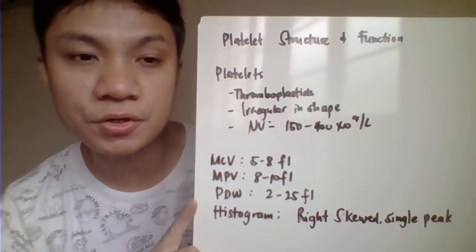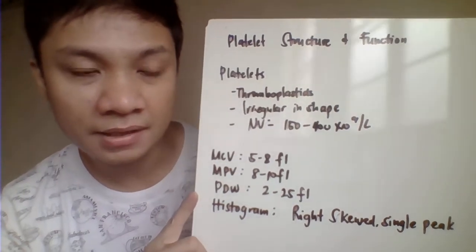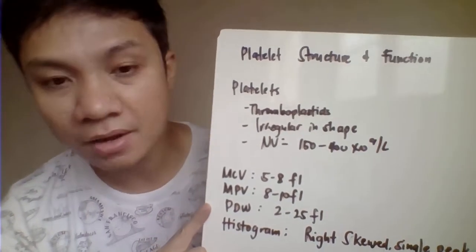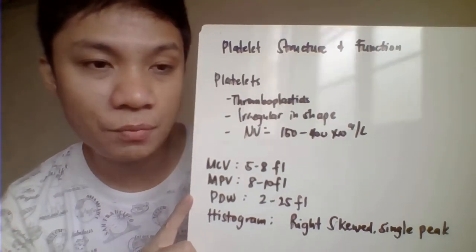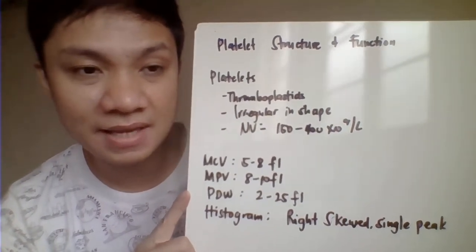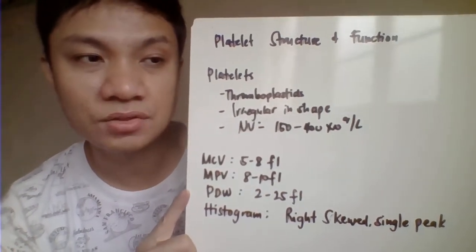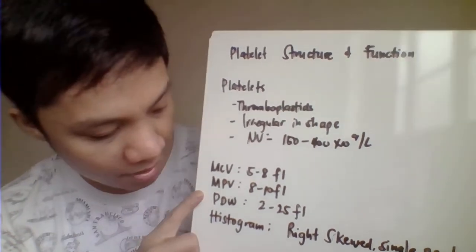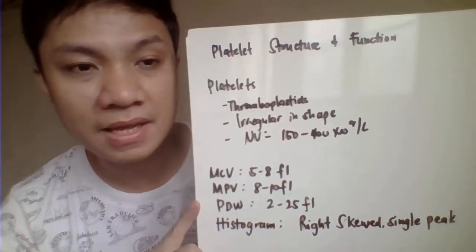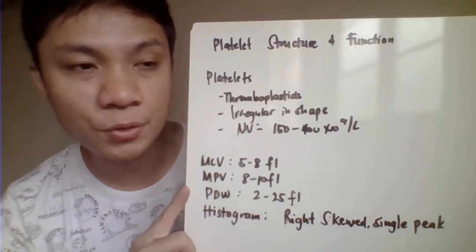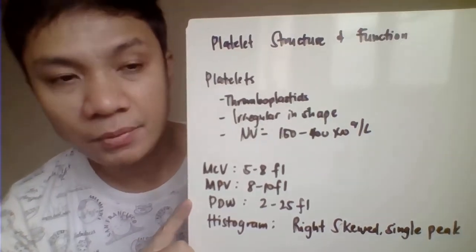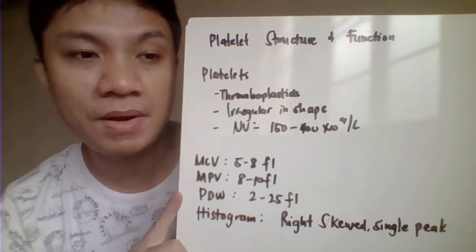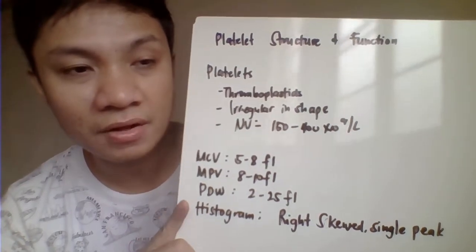The platelet distribution width (PDW) pertains to changes in the size of platelets, just like your RDW or red cell distribution width. The automated instrument is able to classify platelets if a particle has a platelet distribution width of 2 to 25 fL. The automated instrument also produces a graph or a constant sensor histogram.